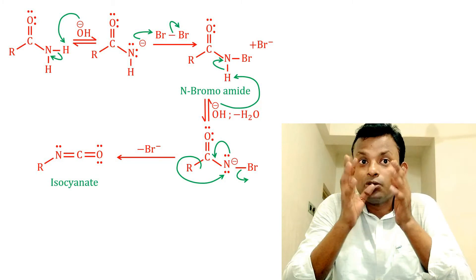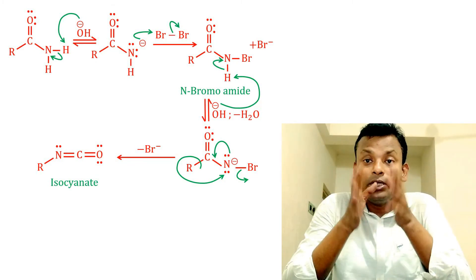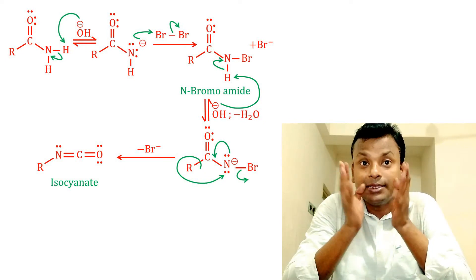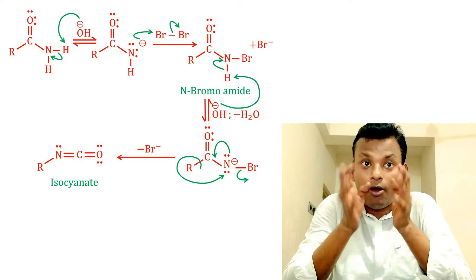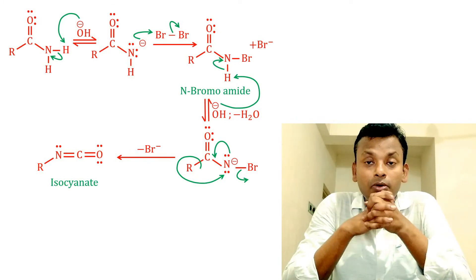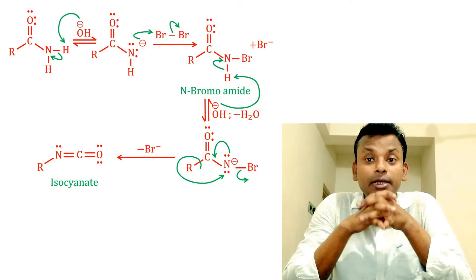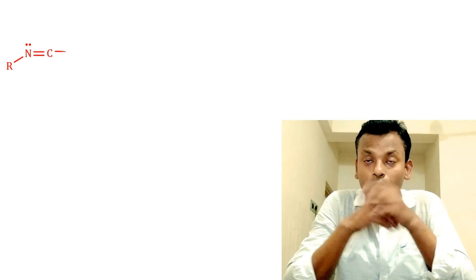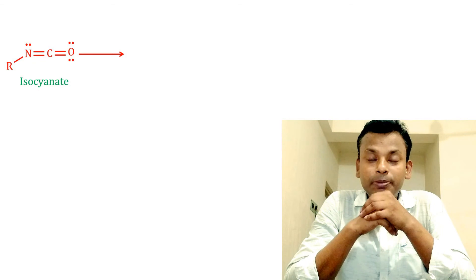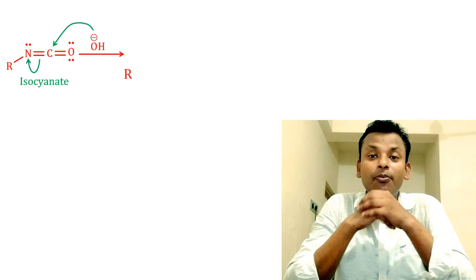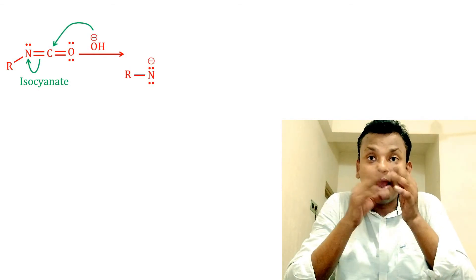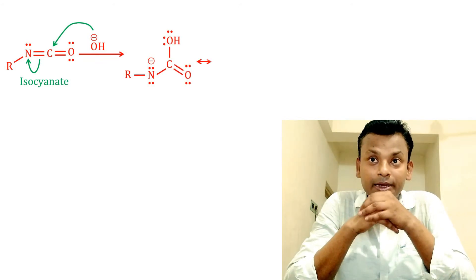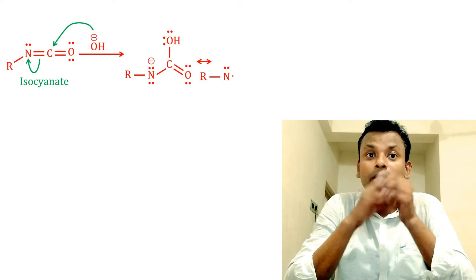Now let's discuss with reaction. RN=C=O, that is isocyanate, reacts with base, that is OH- negative, forms this carbamate ion, that is RNHCOOH-, and this carbamate ion is stabilized through resonance.